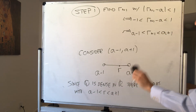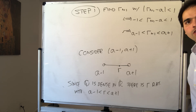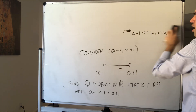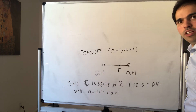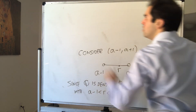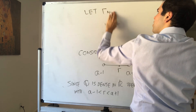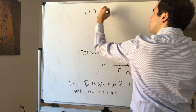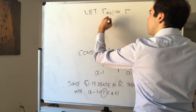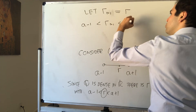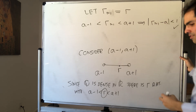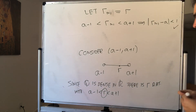Since Q is dense in R, there is a rational r with a − 1 < r < a + 1. And every rational number is of the form r_n for some n — the train goes to every rational city. So we define r_{n_1} to be that r, giving |r_{n_1} − a| < 1. We've completed the first step.